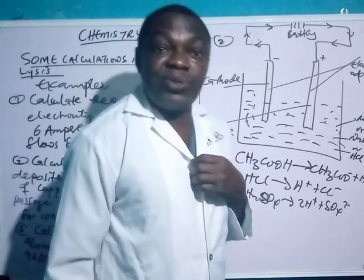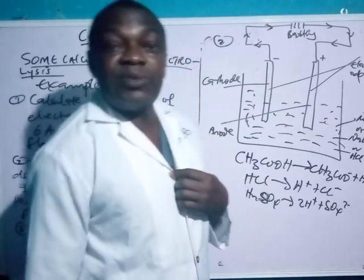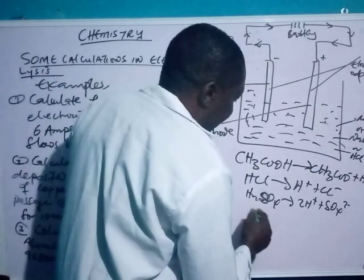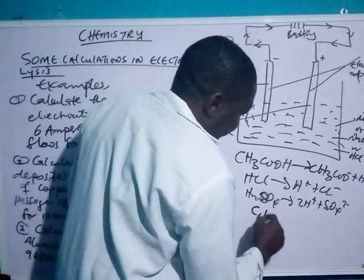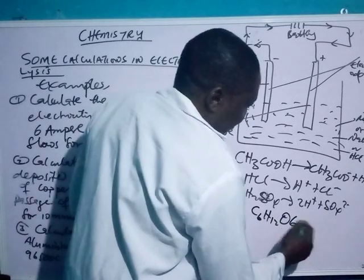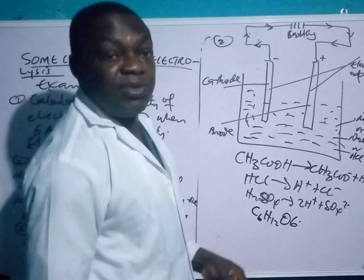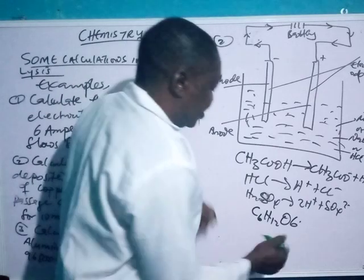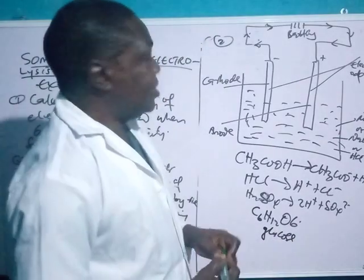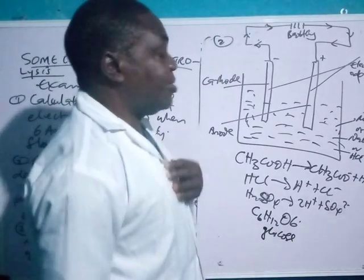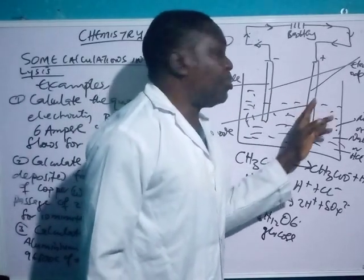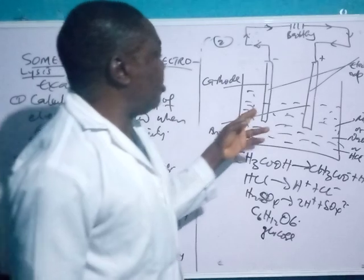Then you have a non-electrolyte. Non-electrolytes are solutions that cannot allow electricity to pass through them. For example, sugar solution cannot be dissociated because it consists of molecules — glucose is one example. There are also other solutions that are non-electrolytes.